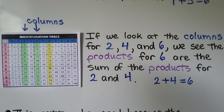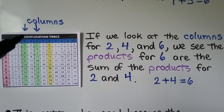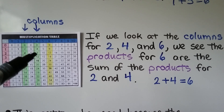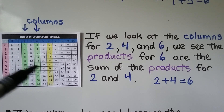If we look at the columns for 2, 4, and 6, we see the products for 6 are the sum of the products for 2 and 4, because 2 plus 4 equals 6. So 2 times 2 is 4, 2 times 4 is 8, and 2 times 6 is 12 — and 4 plus 8 equals 12.